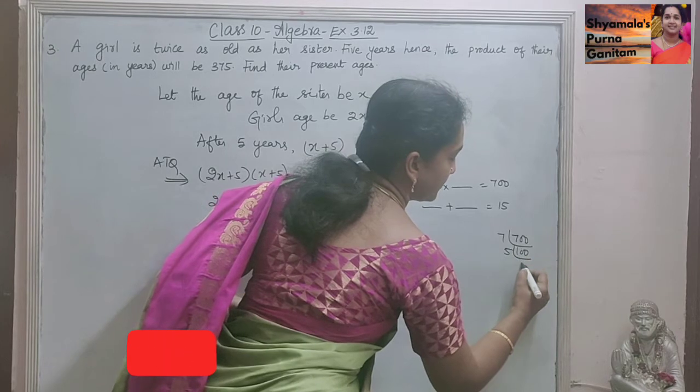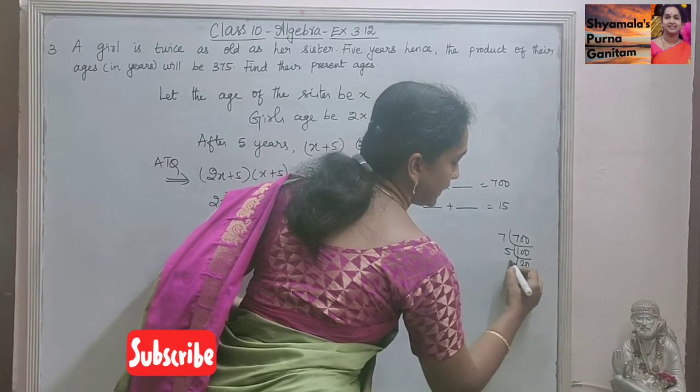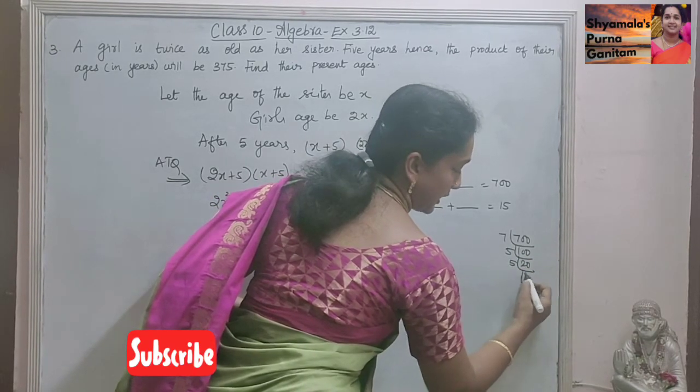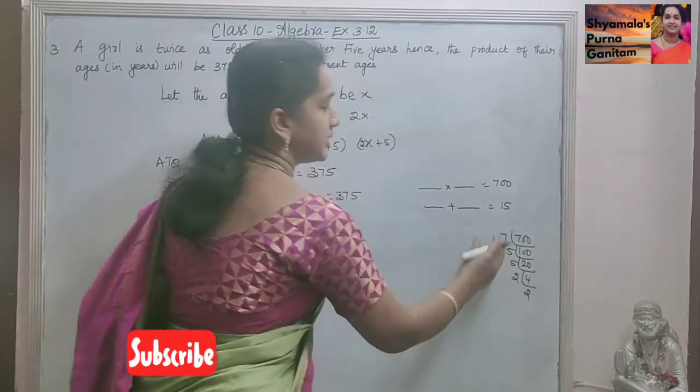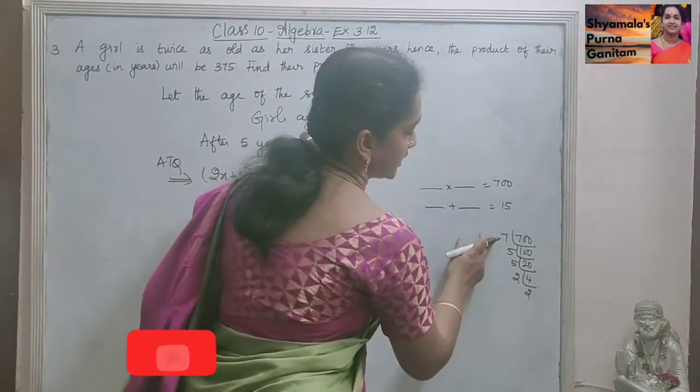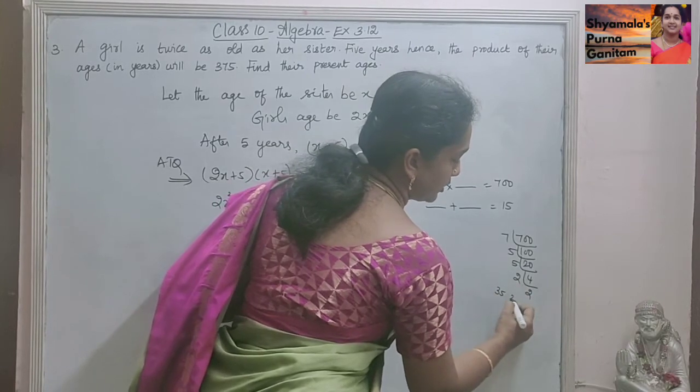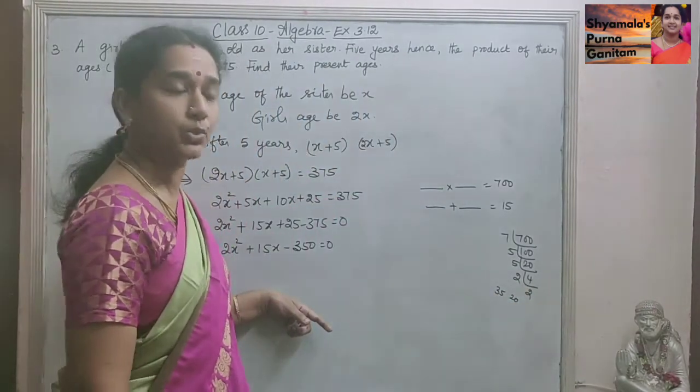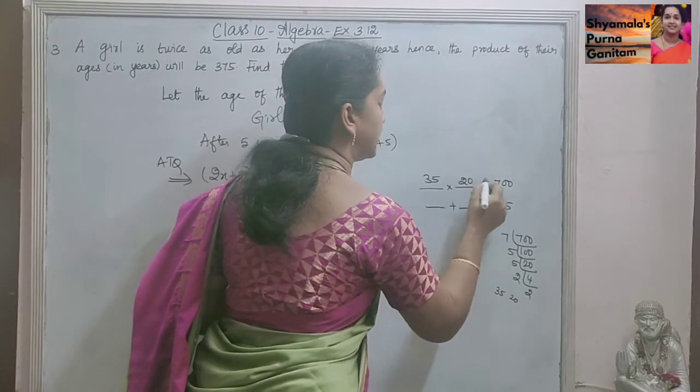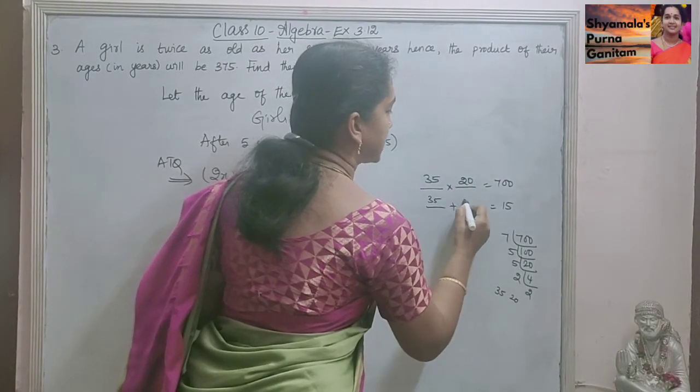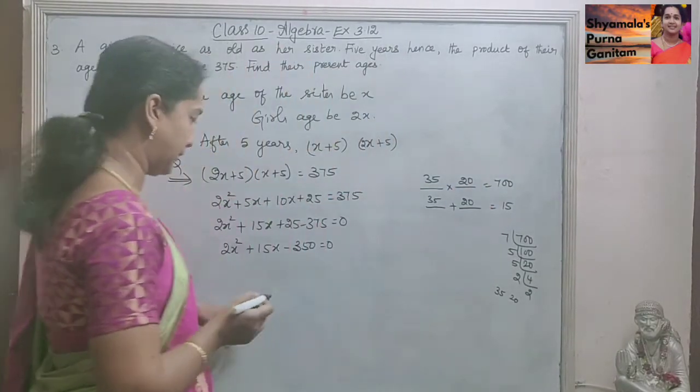Then 5, 20. Then again 5 into 4. Then 2 into 2. So we have to find out this one. So 7 times 5 is 35. 35 and 5 times 2 is 10, times 2 is 20. So 35 and 20. So 35 and 20 if we take, the product is 700. When we subtract this, we will get 50.